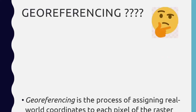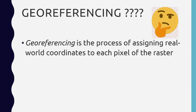Now let's understand what georeferencing means. It is a process of assigning real world coordinates to each pixel of the raster. We have our real world coordinates and we have raster data with pixels. So georeferencing is the process in which we assign real world coordinates to each pixel of the raster, because in GIS projects a lot of georeferencing of raster data needs to be done.